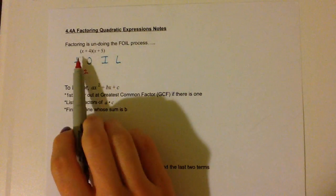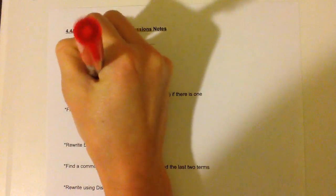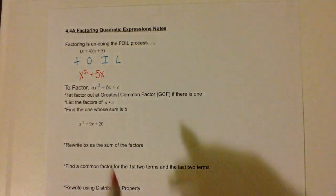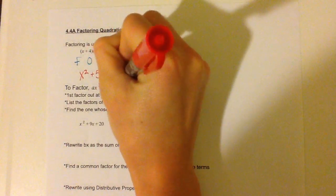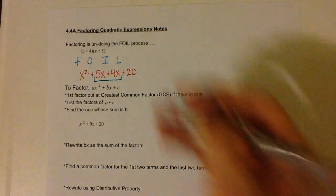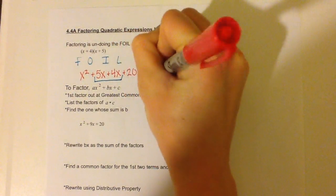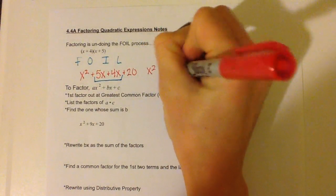Then we have outer, so we have x times 5, so that's plus 5x. Then we have inner, so we have 4 times x, so plus 4x. And our last, 4 times 5, which is plus 20. So then we can combine our like terms, and we are left with x squared plus 9x plus 20.